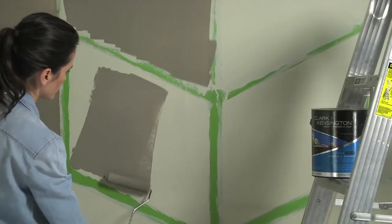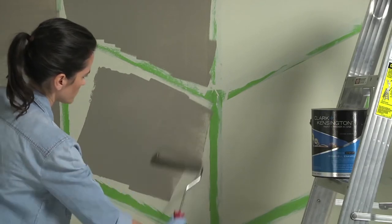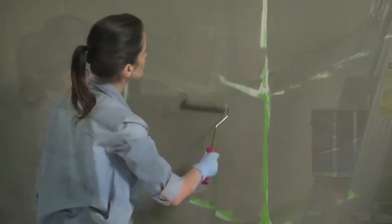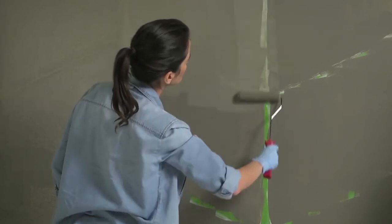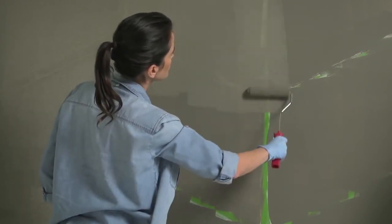Once the taped edges have dried completely, you can begin rolling on your top coat color. Allow the top coat to dry completely. Apply a second coat as necessary.